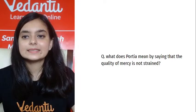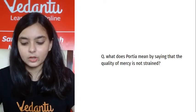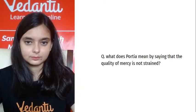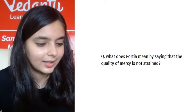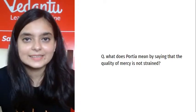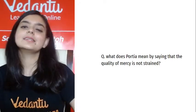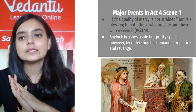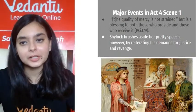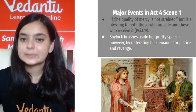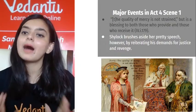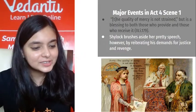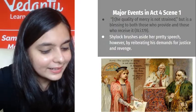The quality of mercy is abandoned and freely poured on the earth by God, just like rain — amazingly written by Portia. It is blessed twice because it blesses both the receiver and the one giving mercy. Shylock, however, brushes aside her speech and reiterates his demand for justice and revenge.